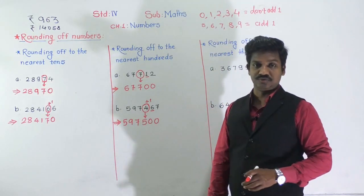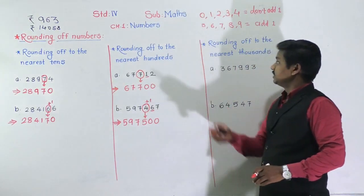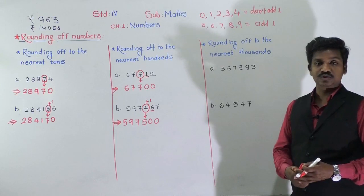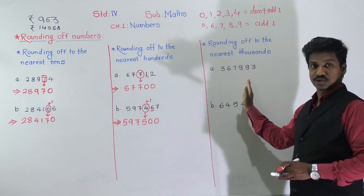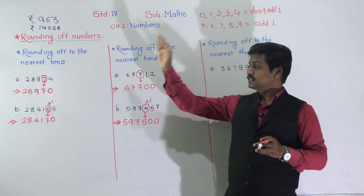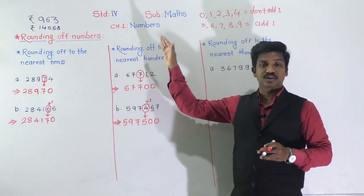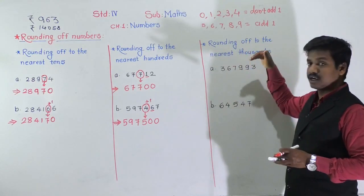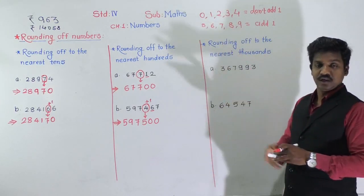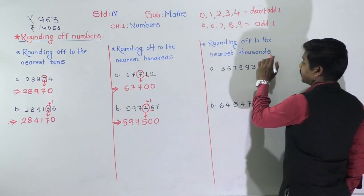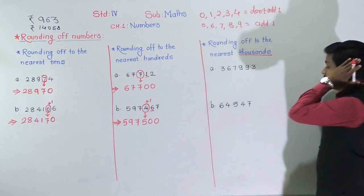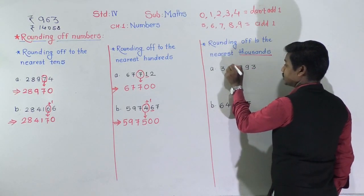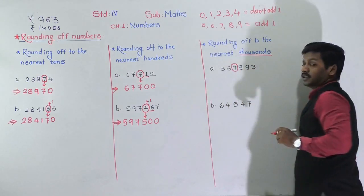Now let's learn rounding off to the nearest thousand. The same rules we've seen for rounding to nearest tens and nearest hundreds apply to thousands, ten thousands, and lakh as well. Here, since we're rounding to the nearest thousands, we need to find the thousands digit. Ones, tens, hundreds, thousand — at the thousands place, there is 7.